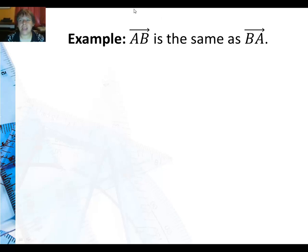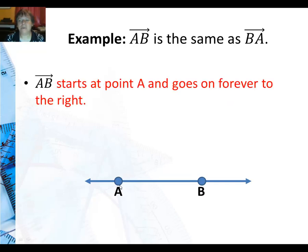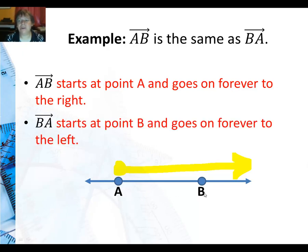Now, this one is ray AB. Is that the same as ray BA? Well, ray AB would actually start at point A and goes on forever to the right. So it's this way. Ray BA starts at point B and goes forever to the left. So it's that way. No, those are never going to be the same line. They don't have the same end point, and they don't go in the same direction.